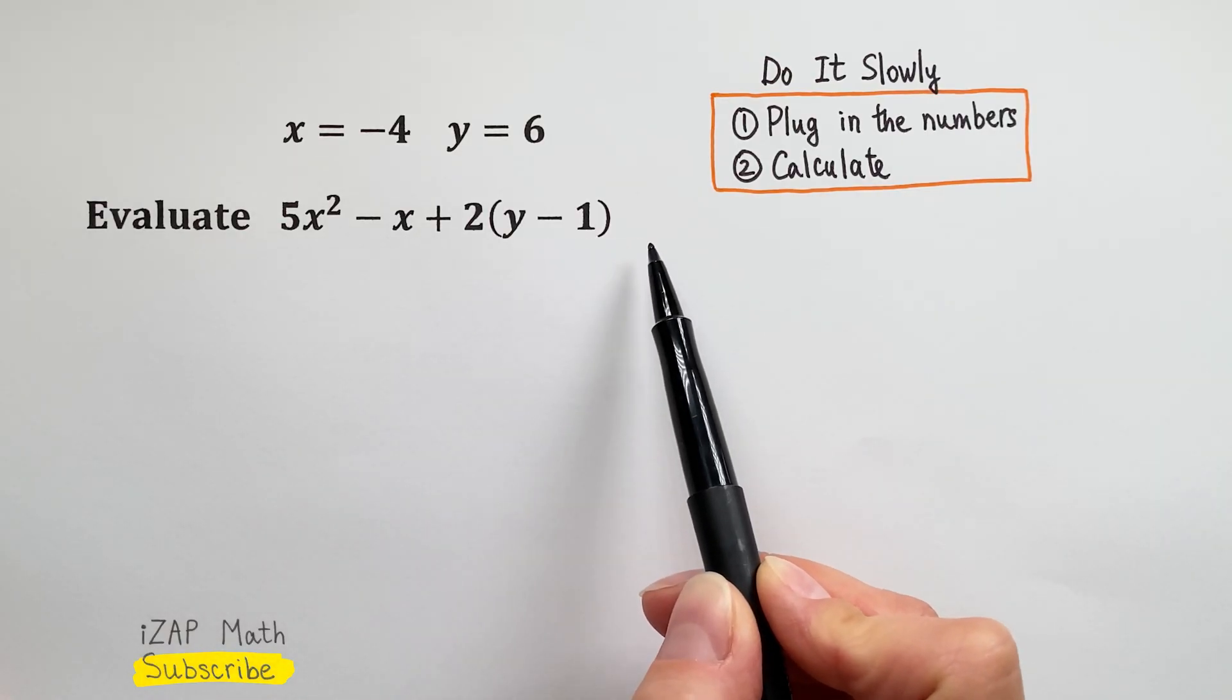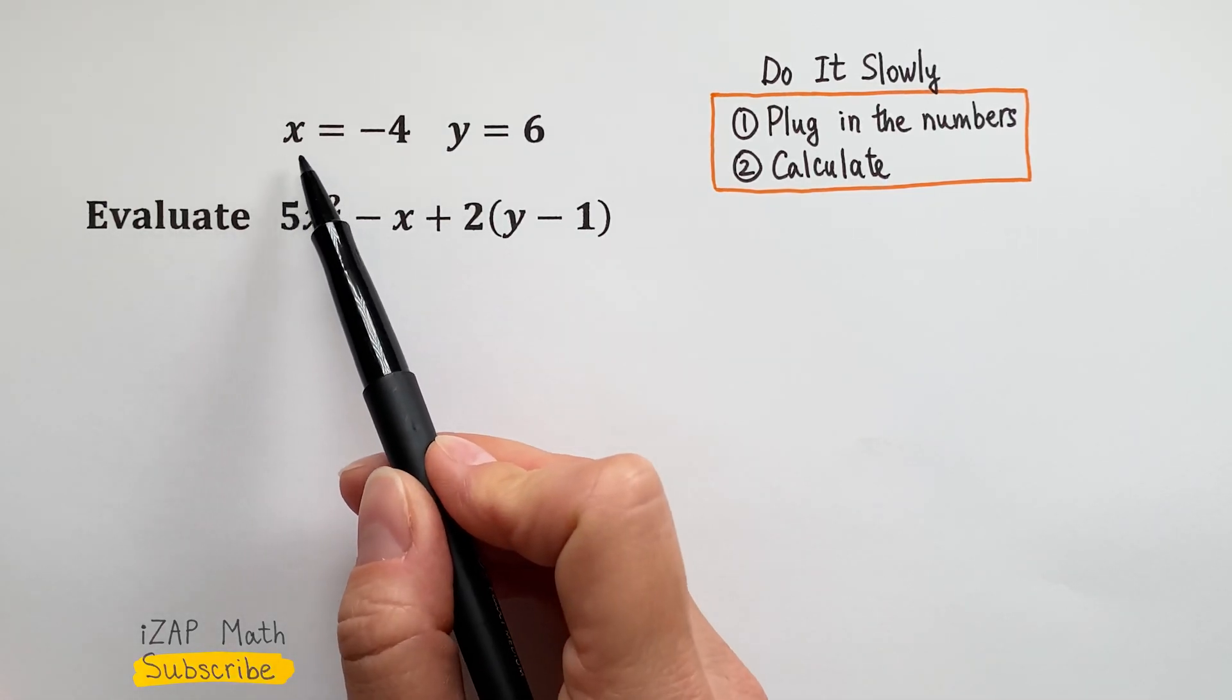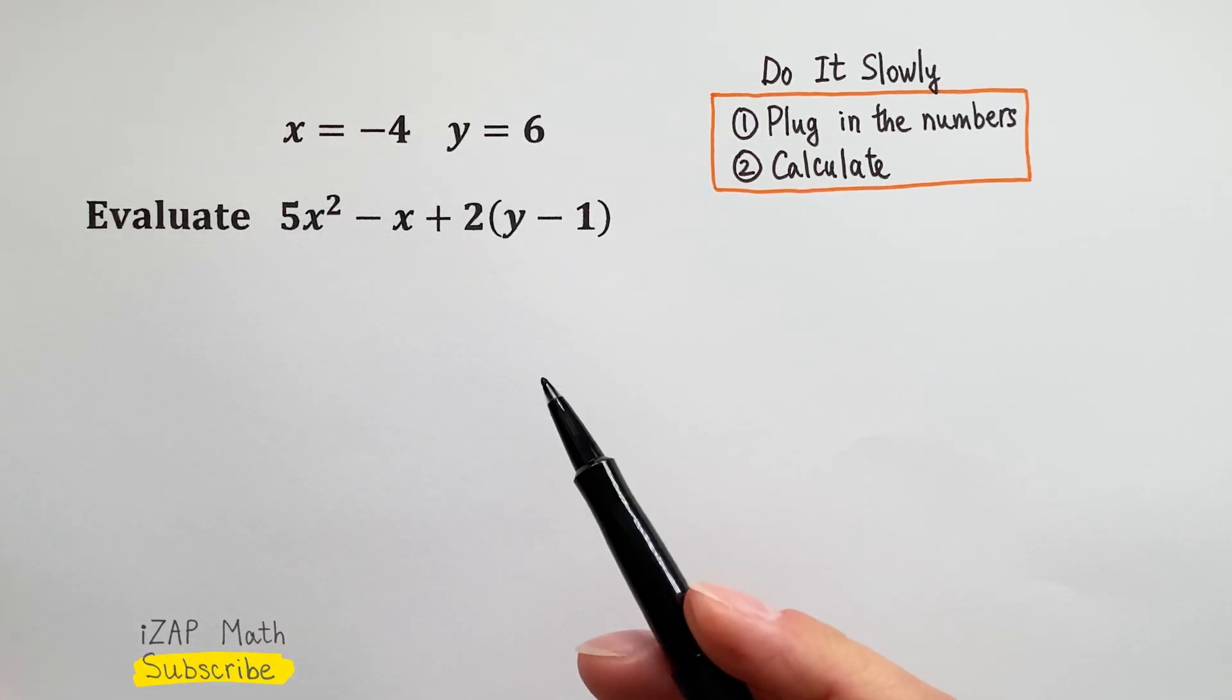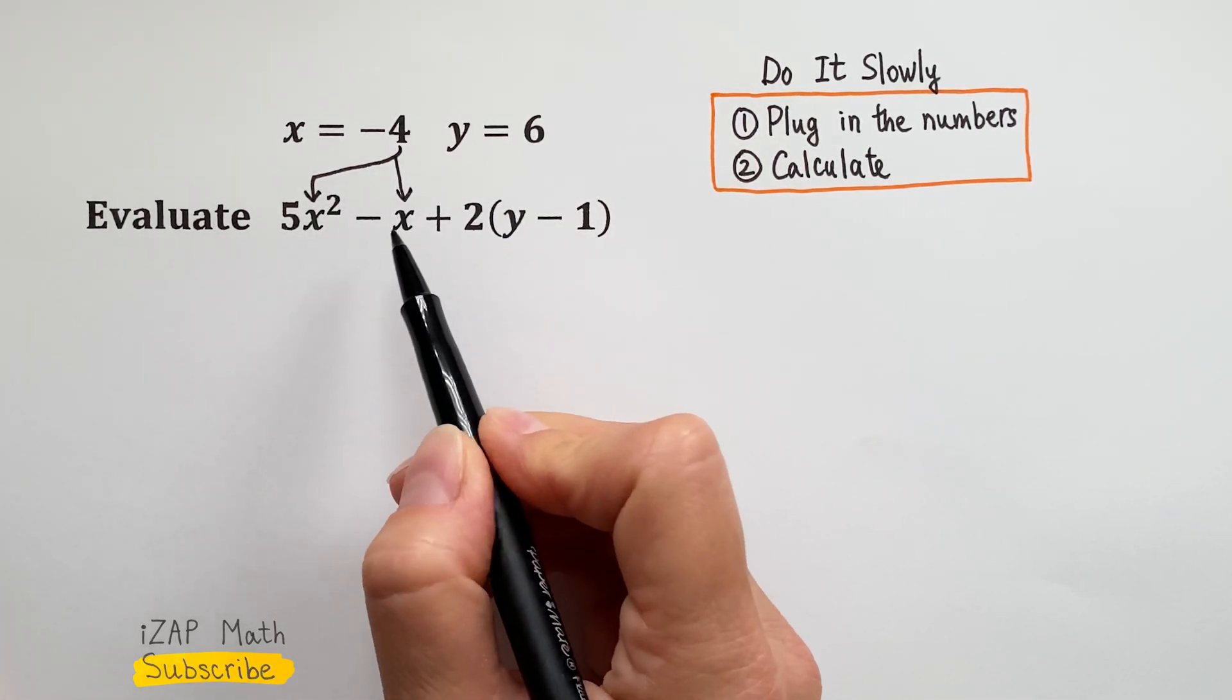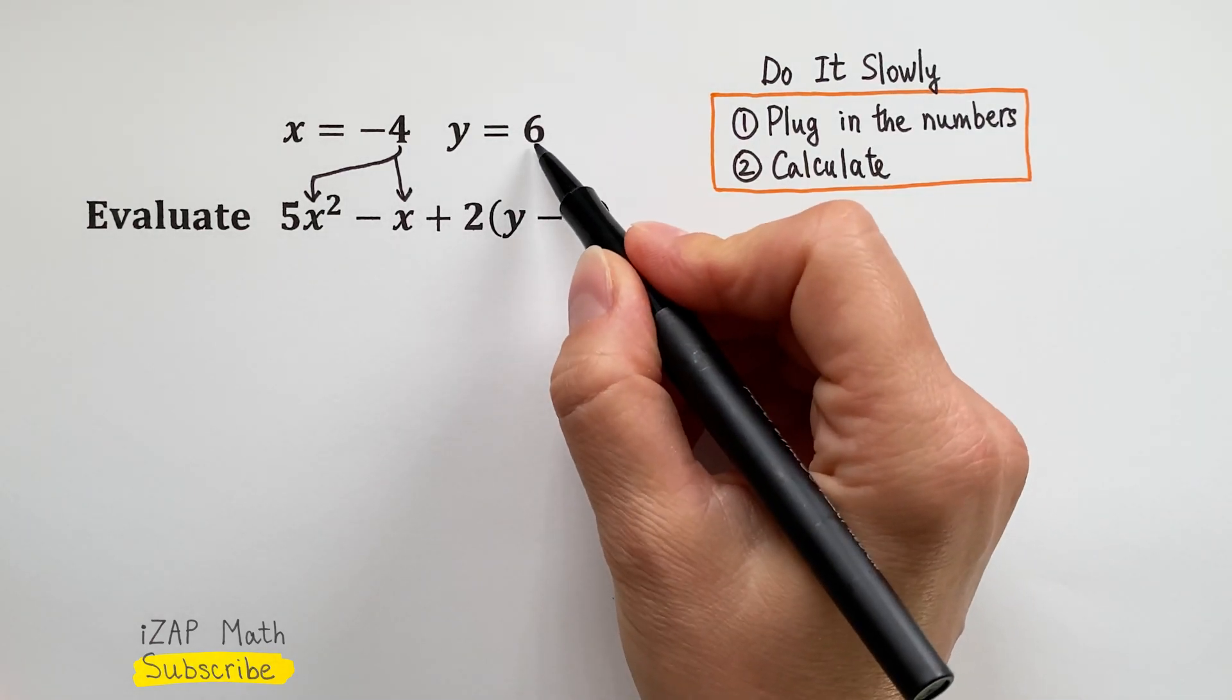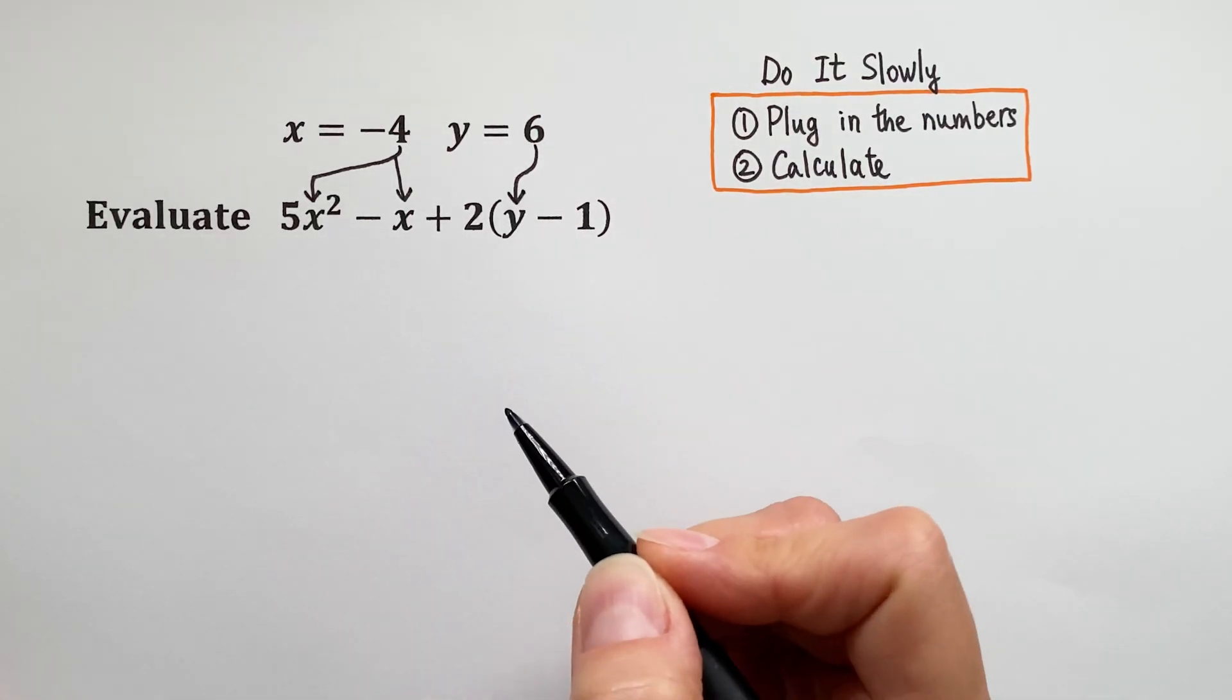Here's our expression. We have two variables, x and y, and we also have the numbers for these variables. x equals negative 4, so we will take negative 4 and plug it in for x in two places, because x shows up in two places. y equals 6, so we will take 6 and plug it in for y, and then we are going to calculate.